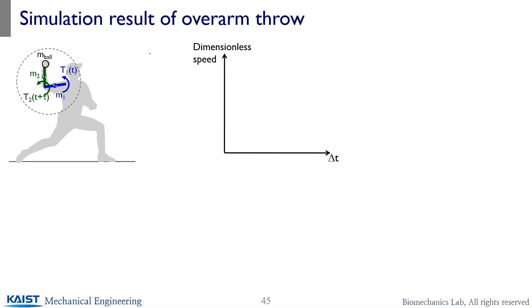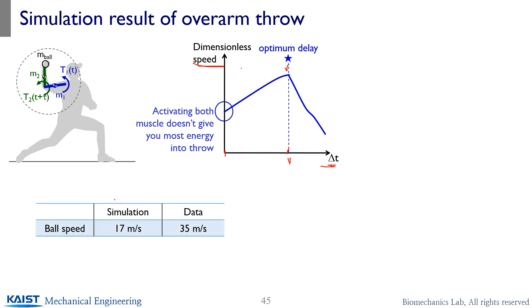For the simulation results as a function of tau, function of delta t and the dimensionless speed of the ball. Yeah, there's optimality exists. If you have a certain amount of delta, that'll maximize the ball speed. So activating, instead of activating both muscles together, you should have certain delay applied to get a maximum performance. So your simulated maximum value is obtained like this. And then the, these are about half of what really happened. So what causes those huge error?